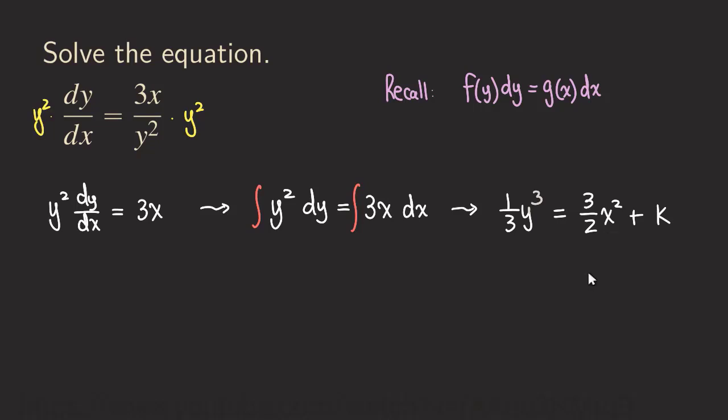Now, there's one thing I want to point out here. When we're integrating the left side of the equation, we're also supposed to be getting a constant here, but we can move it to the right-hand side, and it can be combined with this constant. So we only put the constant on the right side to simplify the work.